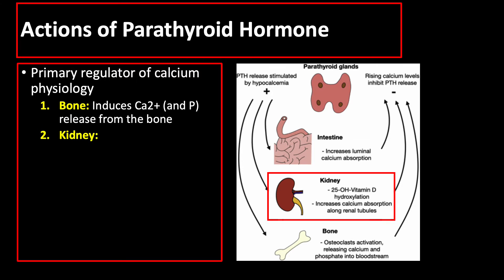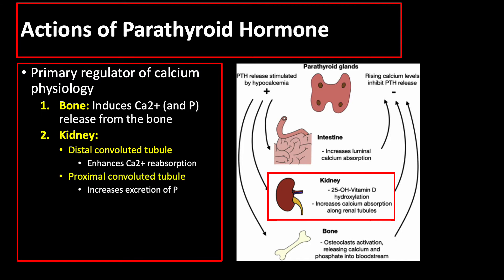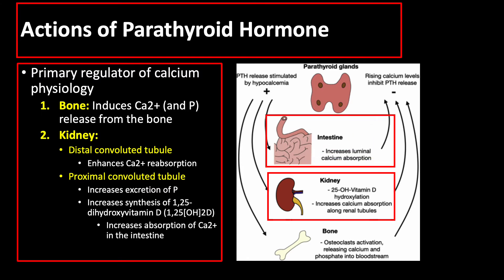Parathyroid hormone also directly acts on the kidneys, where in the distal convoluted tubule, the parathyroid hormone enhances calcium reabsorption, while in the proximal convoluted tubule, it increases phosphorous excretion and increases the conversion of vitamin D to its active form. This active vitamin D is a hormone that increases gastrointestinal calcium absorption. Therefore, parathyroid hormone indirectly increases calcium absorption in the intestine.